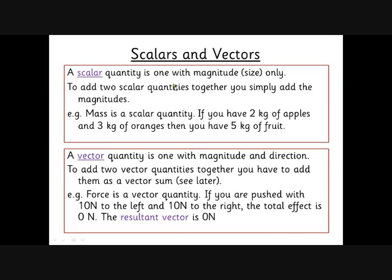A scalar quantity is one which has only got a size. If you're adding them together, it's really simple. You just add the two numbers together. For example, mass is a scalar quantity. If you've got 2 kilograms of apples and 3 kilograms of oranges, you've got 5 kilograms altogether. If you turn the apples upside down, they'll still have a mass of 2 kilograms.